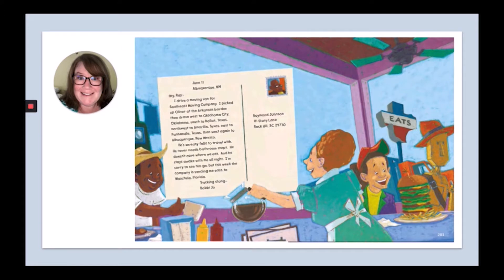June 11th, Albuquerque, New Mexico. Hey Ray, I drive a moving van for the Southeast Moving Company. I picked up Oliver at the Arkansas border, then drove west to Oklahoma City, Oklahoma; south to Dallas, Texas; northwest to Amarillo, Texas; east to Panhandle, Texas; then west again to Albuquerque, New Mexico. He's an easy fella to travel with — he never needs bathroom stops, he doesn't care what we eat, and he stays awake with me all night. I'm sorry to see him go, but this week the company is sending me east to Waiatula, Florida. Trucking along, Bobby Joe.